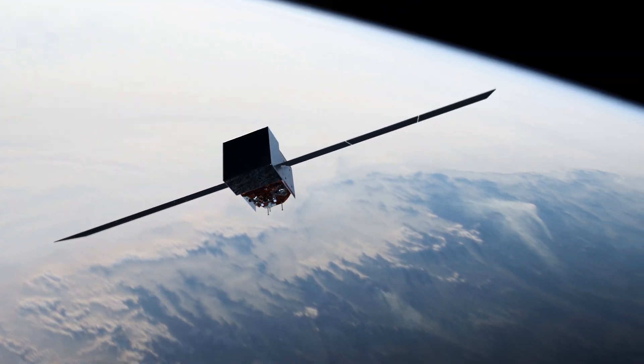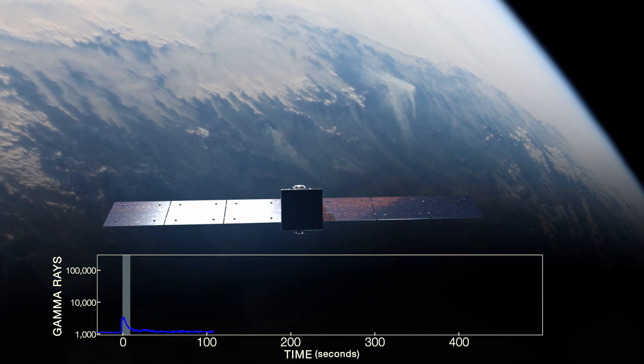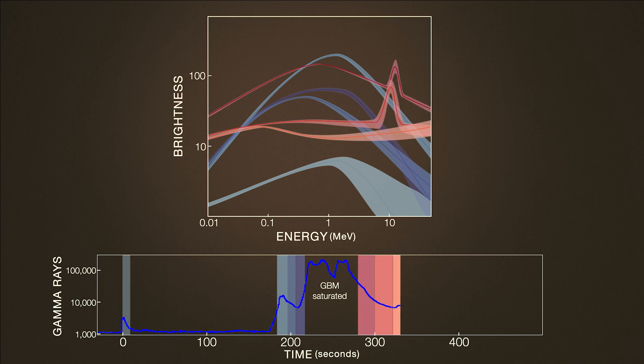NASA's Fermi Observatory carries instruments specifically designed for studying these explosions. Its gamma-ray burst monitor was saturated by the boat's initial flash, but was fine a few minutes later. And it's in that data, around five minutes into the event, that scientists found something new.